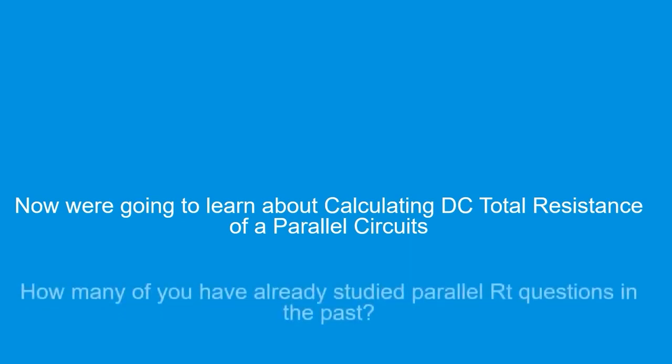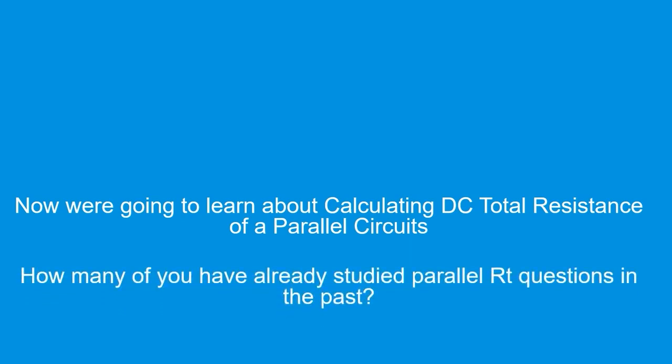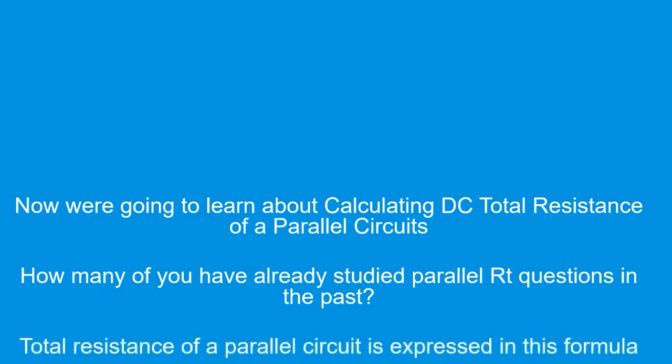Now we're going to learn about calculating DC total resistance of parallel circuits. We're also going to learn about calculating voltage drop across an individual resistor in a parallel circuit. The total resistance of a parallel circuit is expressed in this formula. RTotal equals the reciprocal of the reciprocal of R1 plus the reciprocal of R2 plus the reciprocal of R3, and so on.